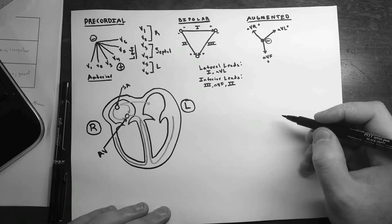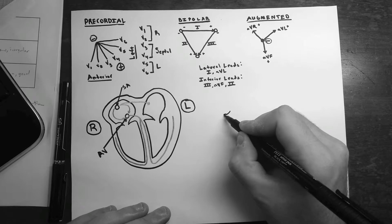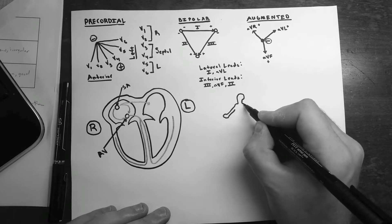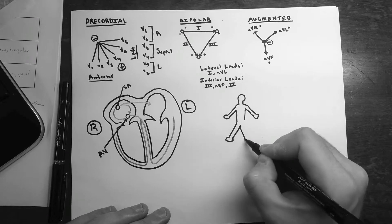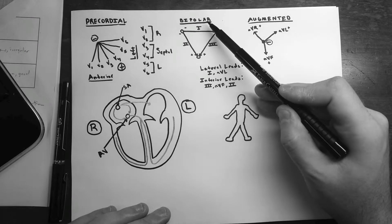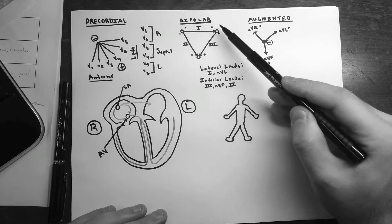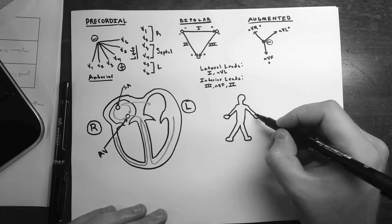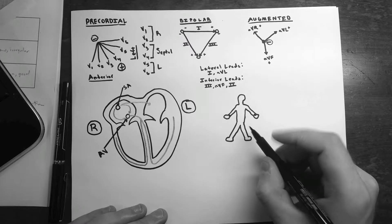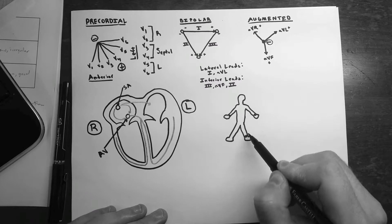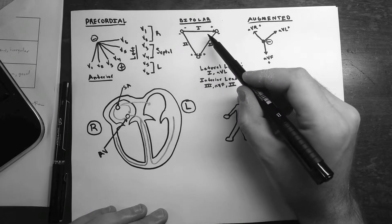So the way leads are typically done is, if you have a person, let's draw a person real quick. Now, the first leads that were developed were the bipolar leads. Very simple, just three leads placed. One on the left arm, one on the right arm, one on the left leg. If you kind of see, that forms kind of a triangle. This triad. I've represented that triad up here.